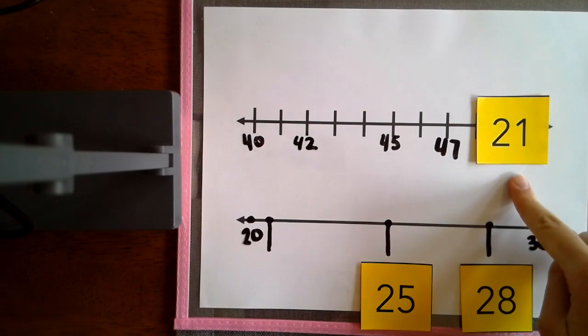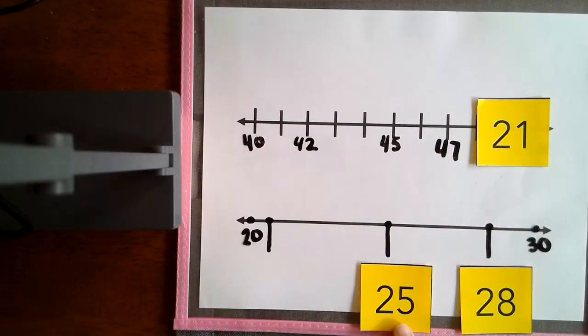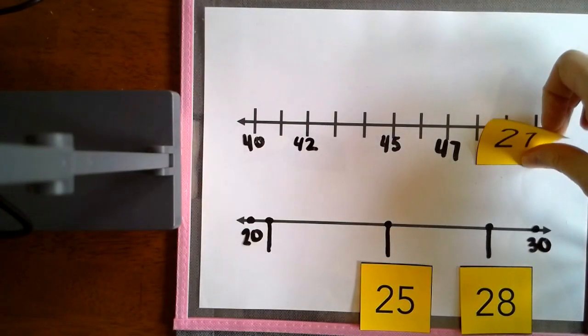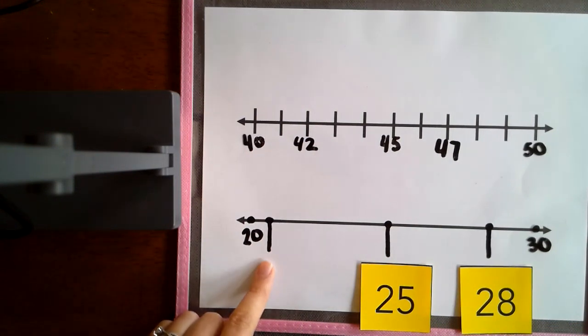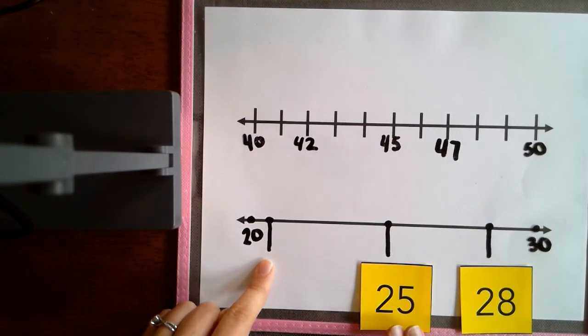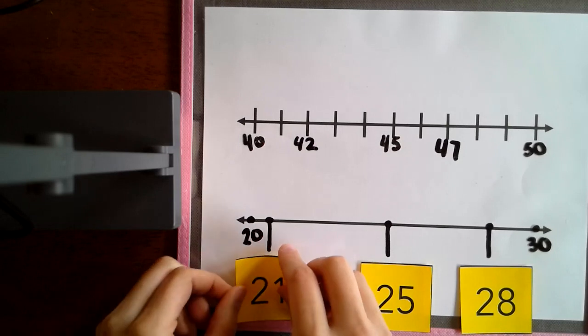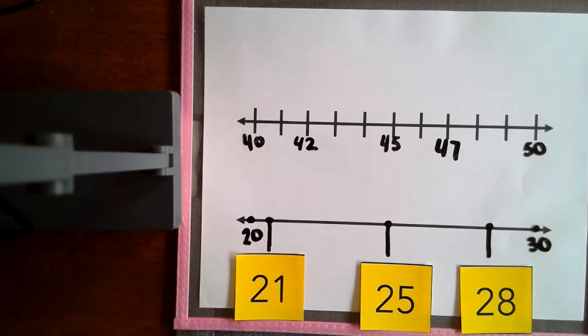Finally, we have 21. I know 21 is less than 25, so 21 is also going to be closer to 20. I have a line here that is close to 20 and less than 25. That's 21's spot. So now we have 21, 25, and 28 in order.